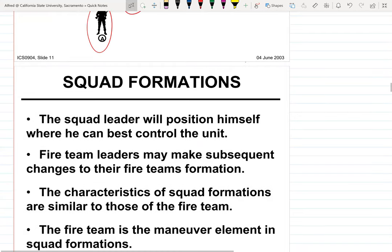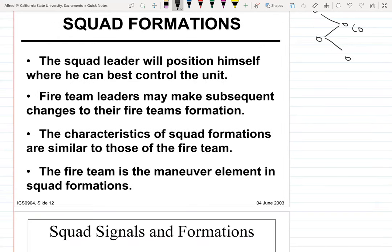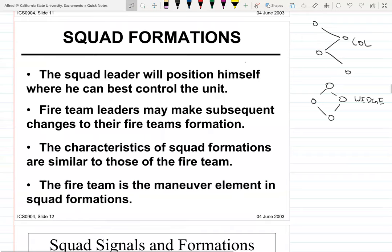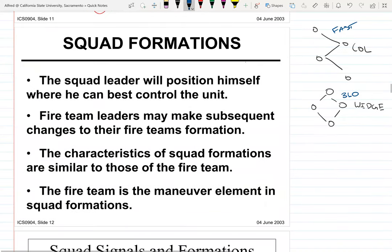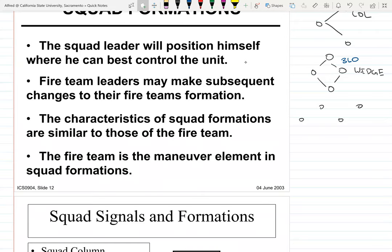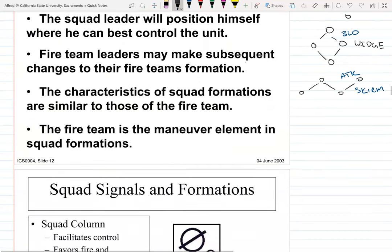Squad formations — I went through fire team formations pretty fast because they're self-explanatory. To recap: columns are like a Z or a lightning bolt; the wedge I remember as a diamond giving 360 security; skirmishers I remember as the attack position; and then there's echelon.